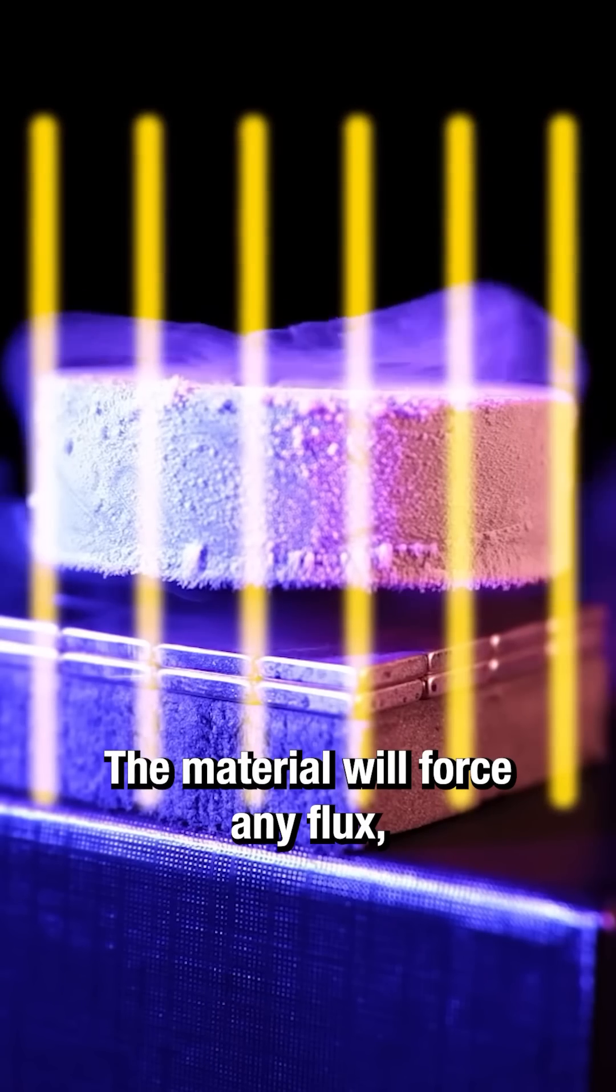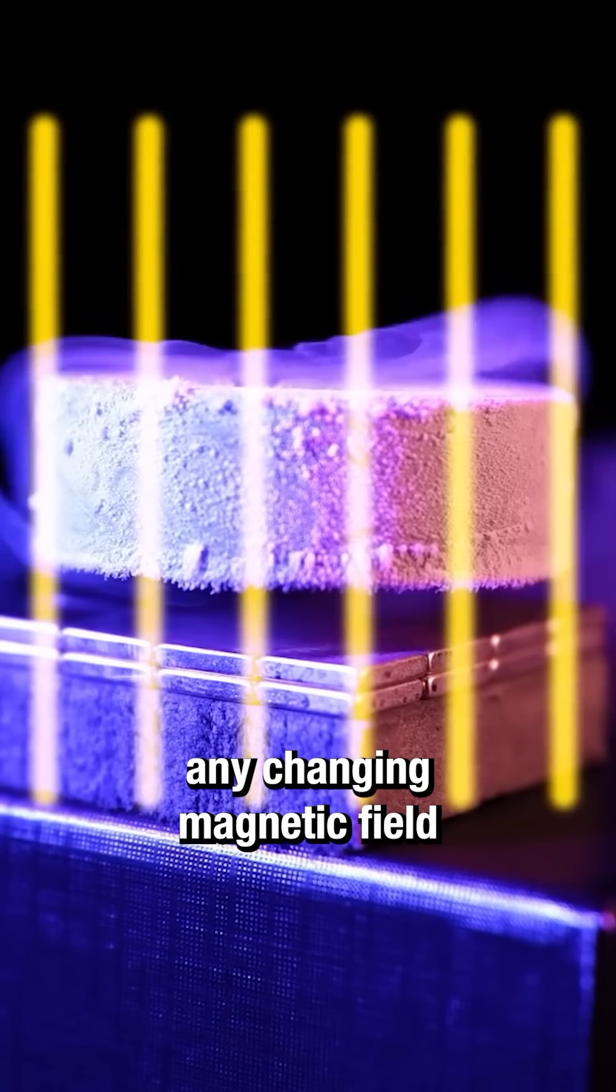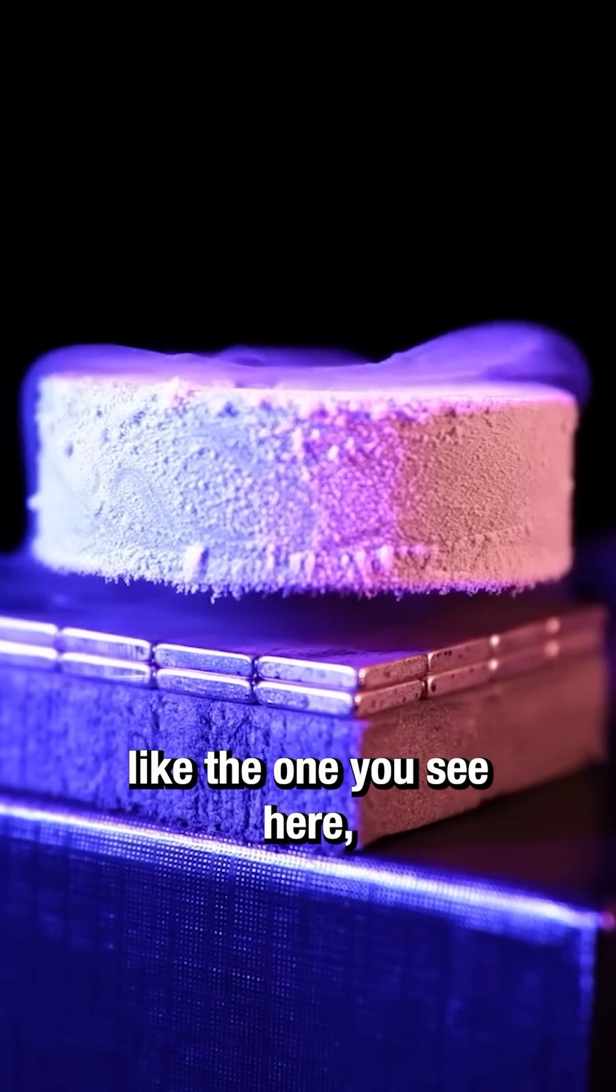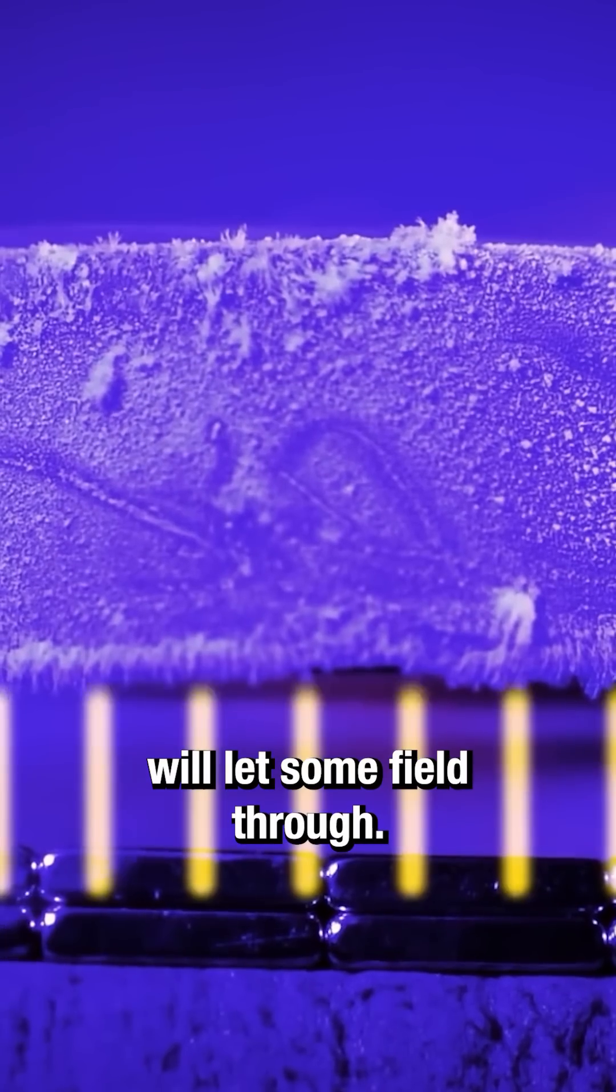The material will force any flux, any changing magnetic field to go around. Specific superconductors though, type two superconductors like the one you see here, will let some field through.